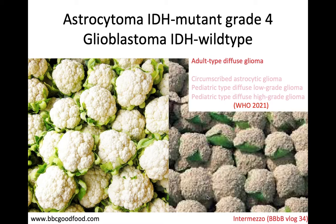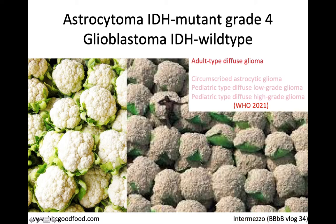We are going to talk about two different adult-type diffuse gliomas that look similar on imaging and histology, and we have to look for subtle things to know the difference. To know these subtle things, I'm going to talk about microglial cells, embryology, and angiogenesis as well. We are going to tell the difference between cauliflowers and bales of cotton by spotting the man resting.